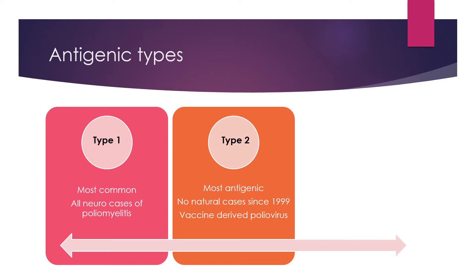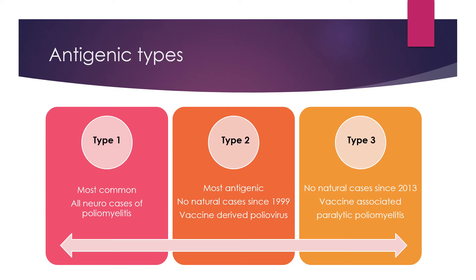No natural cases of poliovirus caused by serotype 2 have been reported since 1999; however, the vaccine strain can cause poliomyelitis, and it is the most common serotype found among VDPV (vaccine-derived poliovirus) strains. Type 3: no natural cases caused by type 3 have been reported since 2013; however, the vaccine strain has the potential to cause paralytic poliomyelitis, and it is the most common serotype to cause VAPP — vaccine-associated paralytic poliomyelitis.